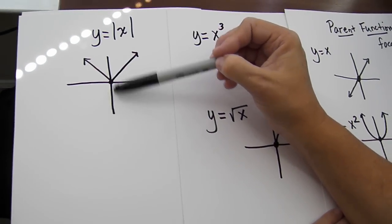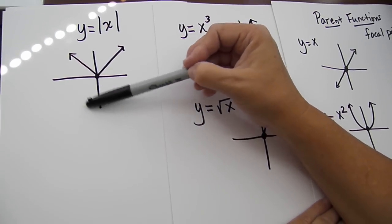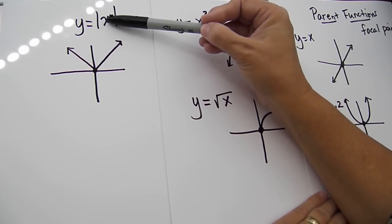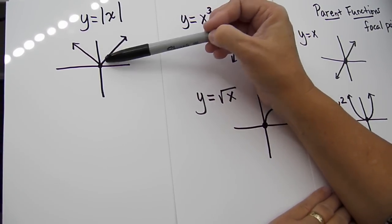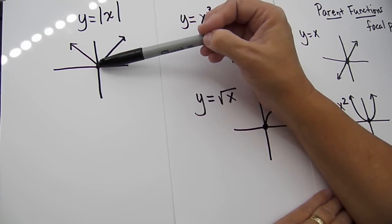Over here, the Y values, again, cannot be negative because there's no way that an absolute value of a number can produce a negative number. So therefore, the range is also greater than or equal to 0.